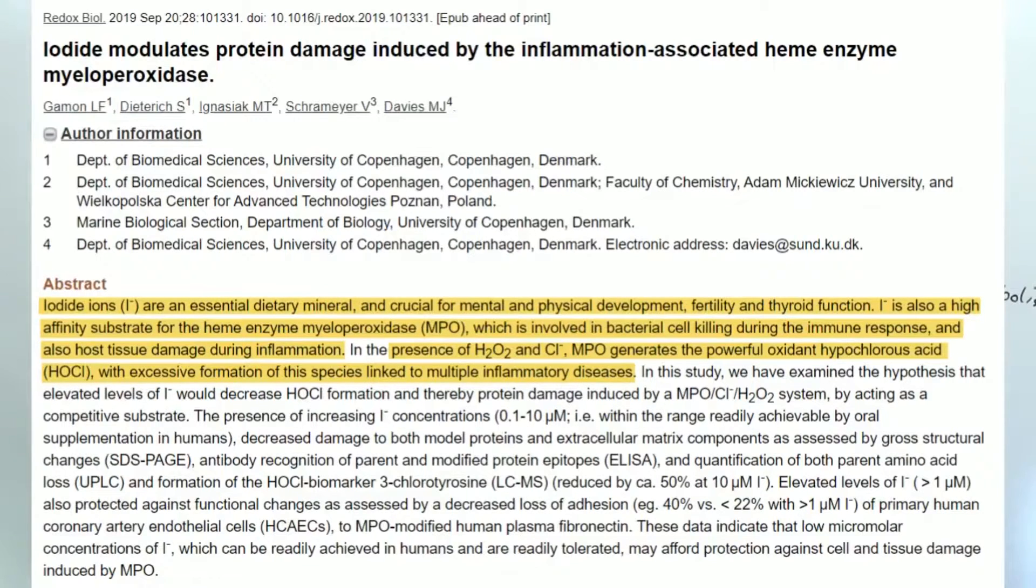Iodide ions are an essential dietary mineral and crucial for mental and physical development, fertility, and thyroid function. Iodine is also a high affinity substrate for the heme enzyme myeloperoxidase. Let's make sense of that for just a minute.